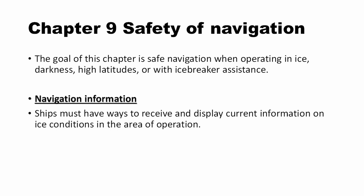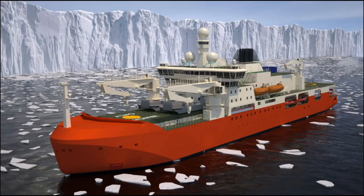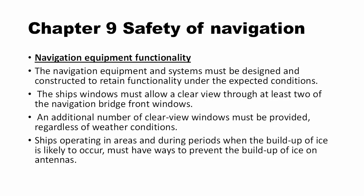Chapter 9: Safety of Navigation. The aim of this chapter is safe navigation when operating in ice, darkness, high latitudes, and when taking icebreaker assistance. Ships must have appropriate equipment to receive up-to-date information including ice information for safe navigation. Navigation equipment must be constructed and installed to perform to their maximum under any environmental conditions. Ships must have the ability to visually detect ice when operating in darkness. Ships involved in icebreaker escort shall have a suitable means to indicate when the ship is stopped. Ships constructed on or after January 1st 2017 and ice-strengthened ships should have two independent echo sounding devices, or one echo sounding device with two independent transducers.